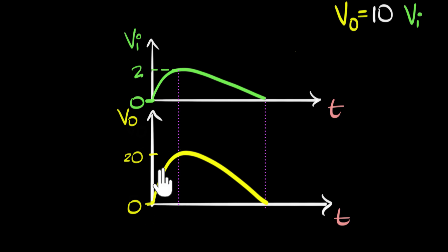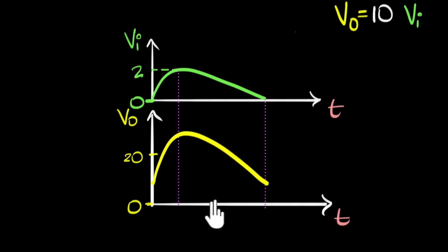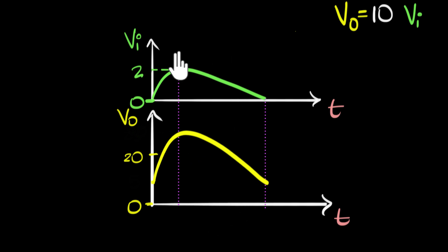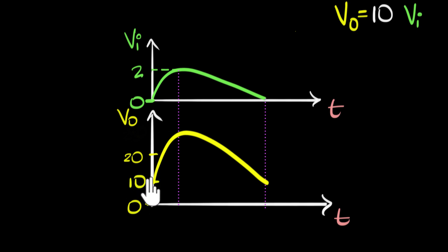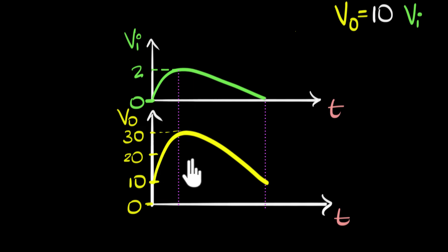Let's say the output doesn't swing from zero to 20. Instead, I push the whole graph up by 10 units. This is still the amplified version of the input, because it still resembles it and it's still 10 times bigger. But notice now, since I pushed the whole thing up by 10 units, the minimum is 10 and the maximum is 30. Now this relationship V_out = 10×V_in is not satisfied — V_out is not 10 times V_in. But what is the relationship?